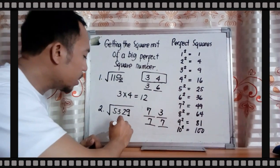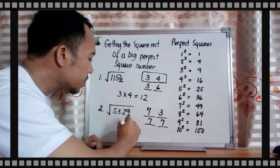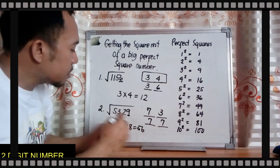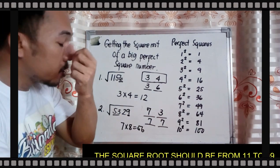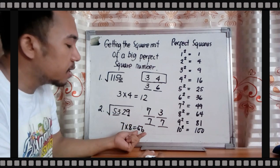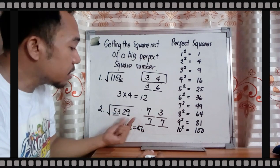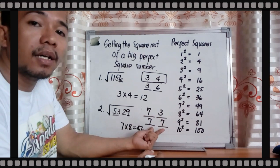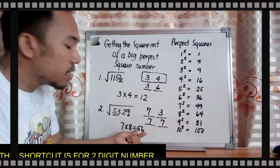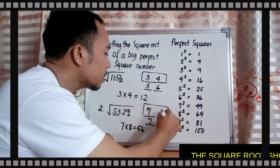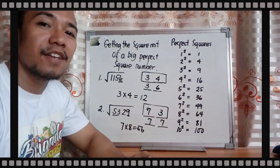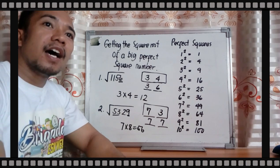Now, multiply 7 by its next number, which is 8. Seven times 8 is 56. Compare 56 to your first two digits: 53. Since 53 is less than 56, you use the smaller option. So the square root of 5,329 is 73.